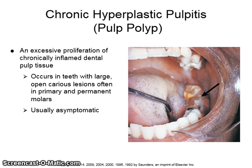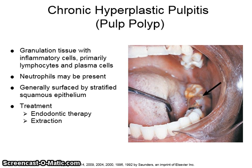Chronic hyperplastic pulpitis, or pulp polyps, is an excessive proliferation of chronically inflamed dental pulp tissue. It occurs in teeth with large, open, carious lesions, often in primary and permanent molars, and is usually asymptomatic. Granulation tissue with inflammatory cells, primarily lymphocytes and plasma cells, are found in the tissue. Neutrophils may also be present, and the tissue is generally surfaced by stratified squamous epithelium. The treatment includes endodontic therapy or extraction.